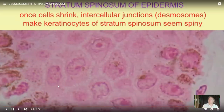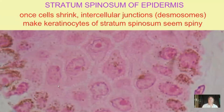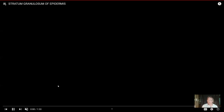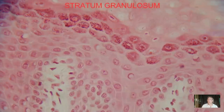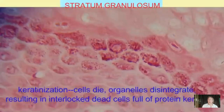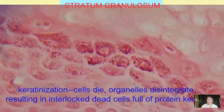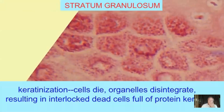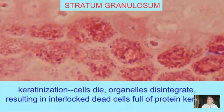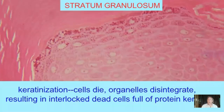By the time cells reach the stratum granulosum, this is where they will die, going through their final stages of life. The organelles disintegrate, and by the end it's a dense package of keratin. We see granules here, which is why the layer is named the stratum granulosum. There are two classes of granules visible in this layer.